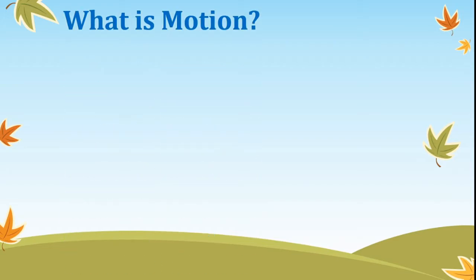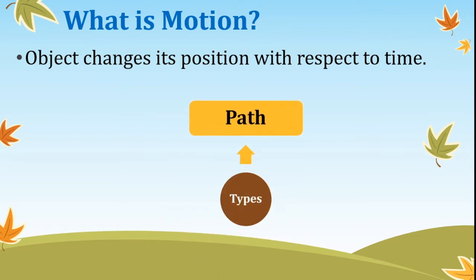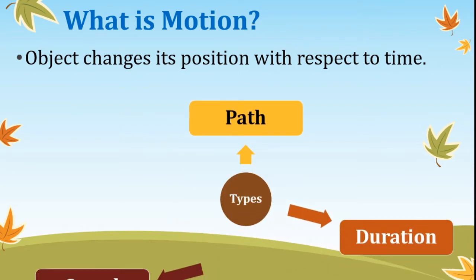First, let's understand what is motion. When an object changes its position with respect to time, then the object is undergoing motion. Depending upon the motion it undergoes, there are three types of motions: path, duration, and speed.